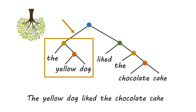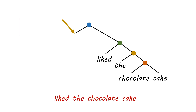What happens when we actually chop that off and get rid of it? We get this phrase that's left hanging there: "liked the chocolate cake." This is not a complete sentence - we don't know who's liking the chocolate cake, so it's not complete. But the thing that we plug in that spot does not have to be "the yellow dog." We could, in theory, plop something else in there and create a perfectly good sentence.